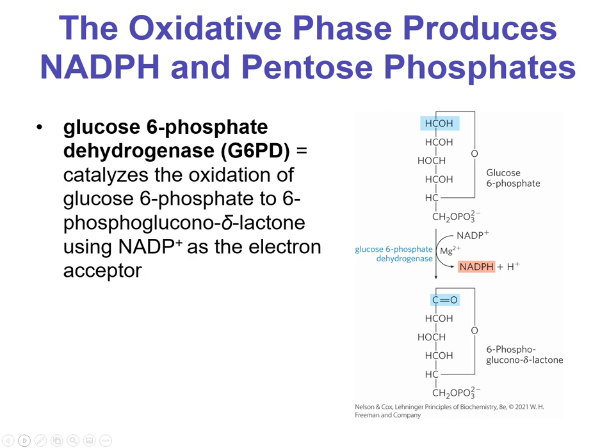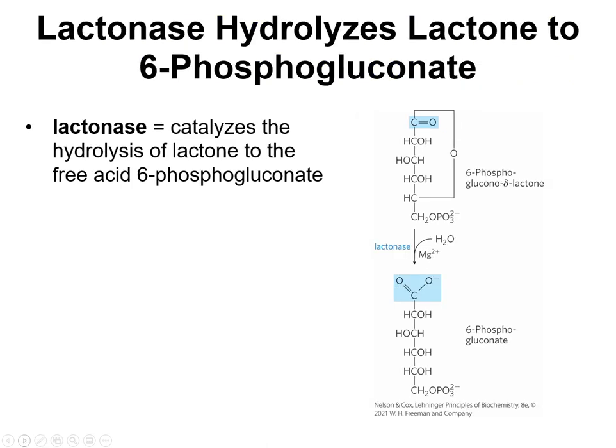The first step in this process uses the enzyme glucose 6-phosphate dehydrogenase. You oxidize glucose 6-phosphate to a lactone, and in the process you make NADPH. And just a word to the wise: if I'm not going into detail about a mechanism or mentioning that this is a mechanism you should be able to write, you're not responsible for drawing the mechanism. So after we form the lactone — it's a cyclic lactone — we're going to use lactonase to catalyze the hydrolysis of the lactone to the free acid, 6-phosphogluconate.